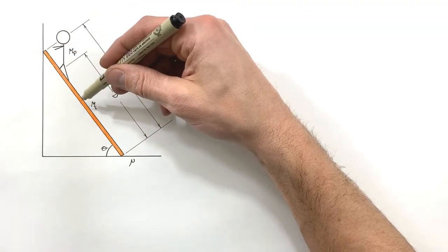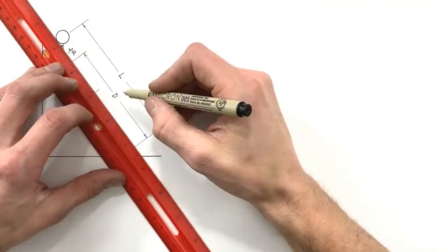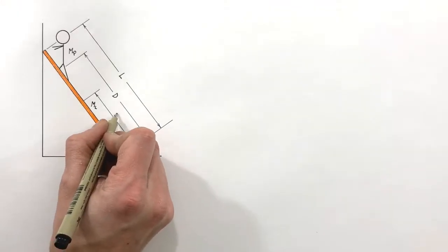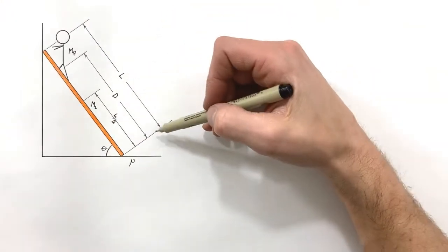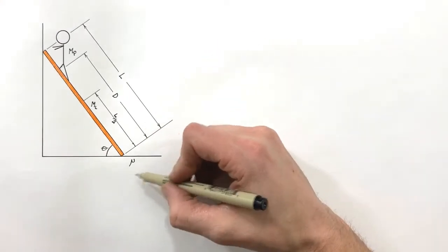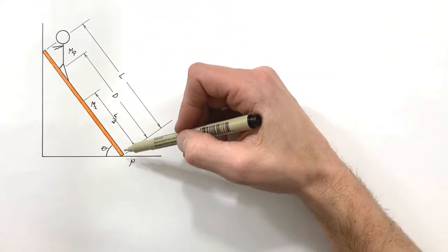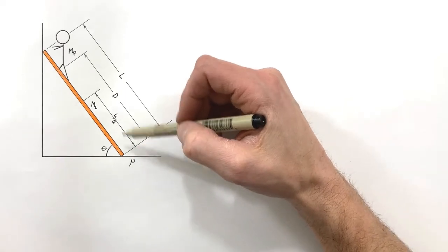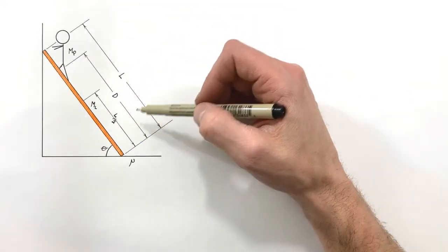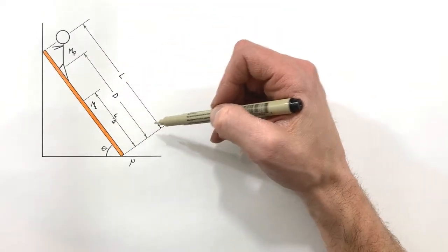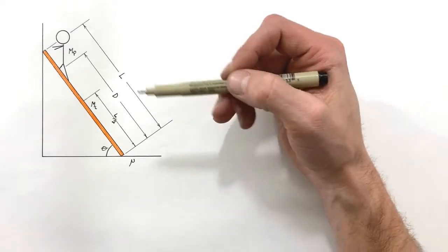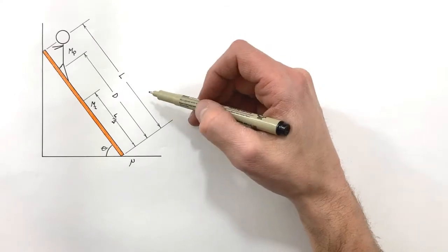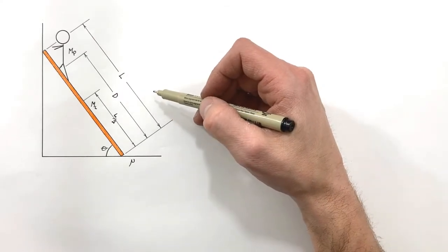The mass of the ladder ml is located right in the middle of the ladder. What I'm going to do in this problem is solve for the required amount of friction to keep this ladder from sliding, but our solution should be rearrangeable so we can find whatever it is we might need for whatever version of this problem you're faced with.